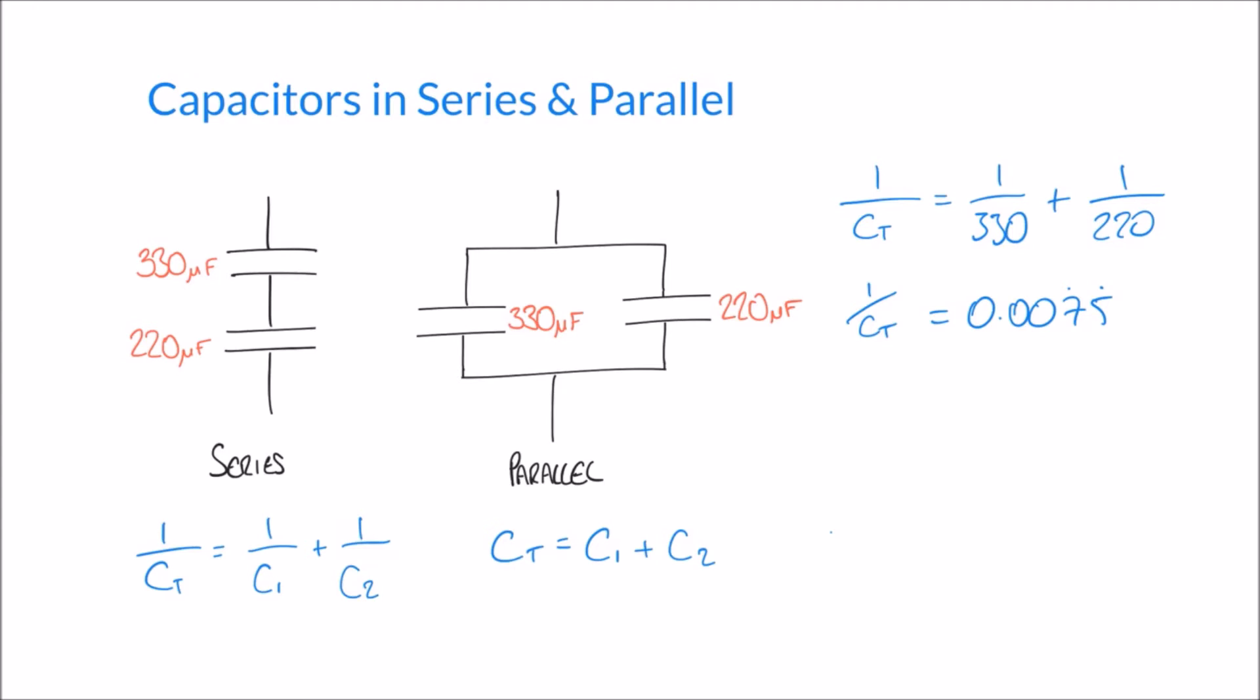To save writing this down and re-entering it into our calculator, it's best just to use the answer function on your calculator. So you can say 1 over the answer on your calculator, and that's going to give me CT equals 132 microfarads.